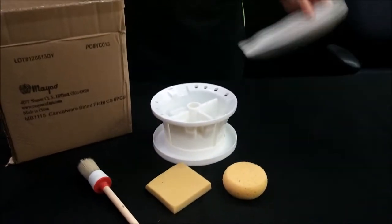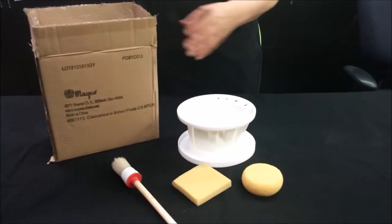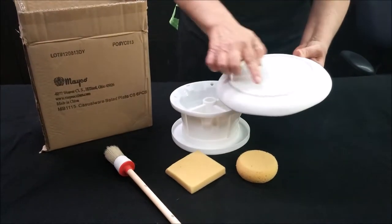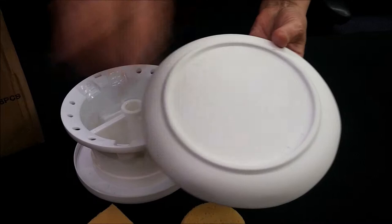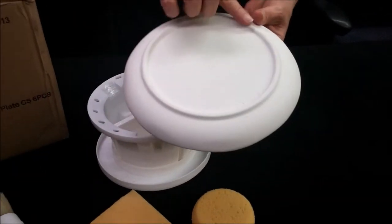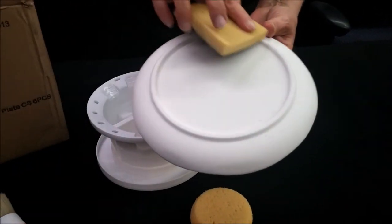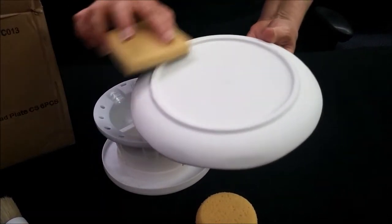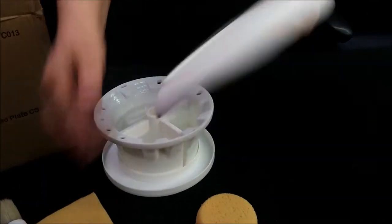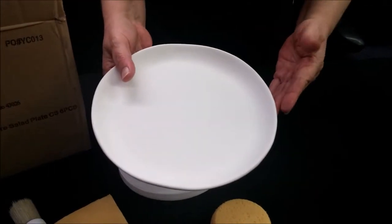After your hands are washed, take your bisque out of the box and first look for any box marks that you might see. Here's a little box mark. It just comes from the cardboard rubbing up against it and you can just very carefully see how quickly that comes off. Just spot check so that your bisque is nice and pretty.